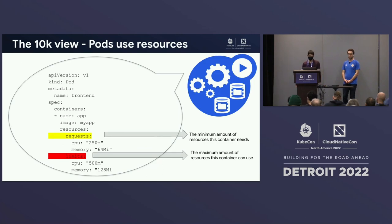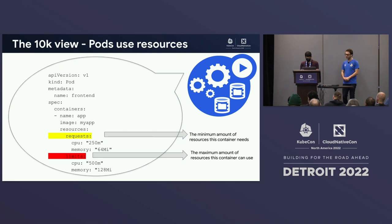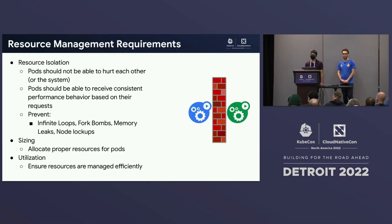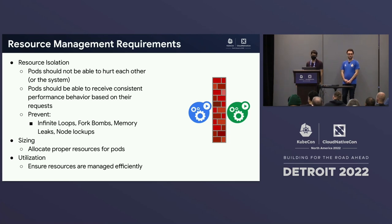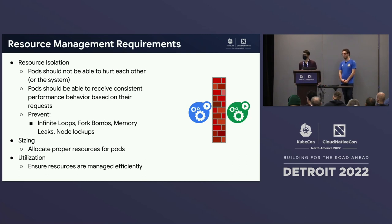Here's an example of a pod that has resources set — requests and limits. The scheduler looks at requests when scheduling pods on nodes. When it finds a node able to satisfy the request, it schedules the pod there. A limit is what a pod cannot exceed. Requirements from resource management: pods should not hurt each other, they should stay within limits, get consistent performance, and we should prevent infinite loops, fork bombs, memory leaks, and node lockups. We want management overhead to be minimal so as many pods as possible can run.